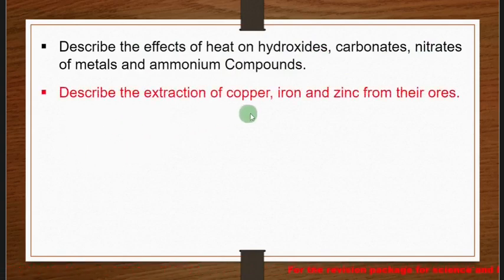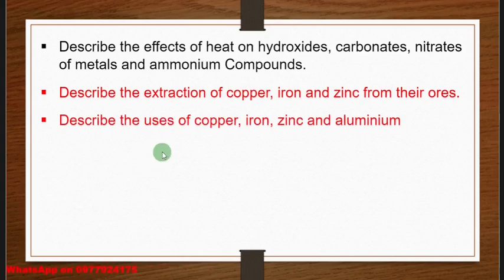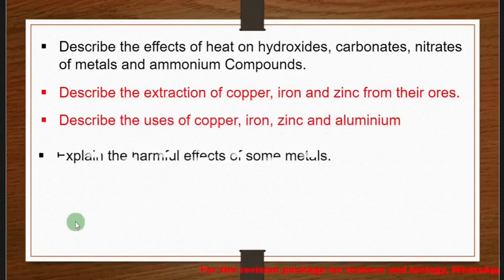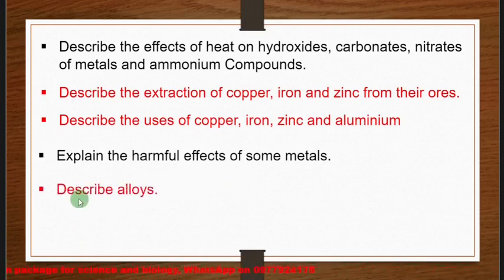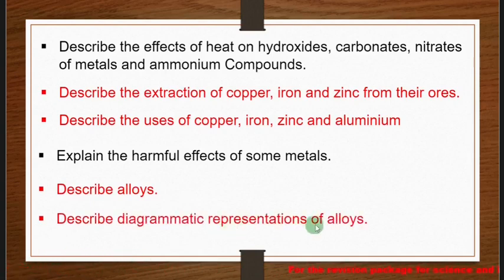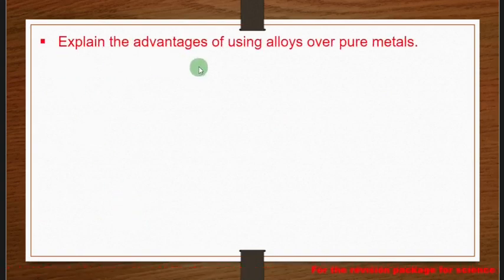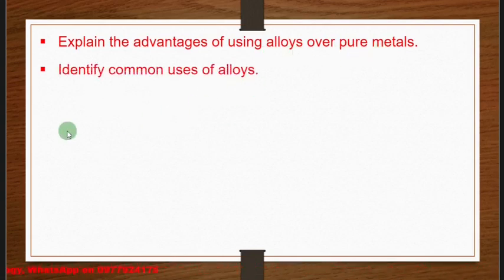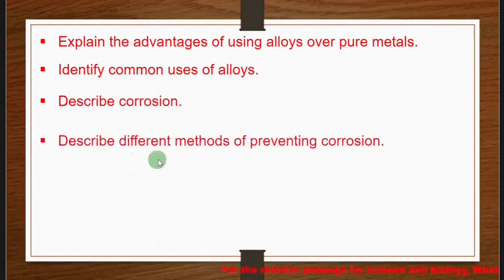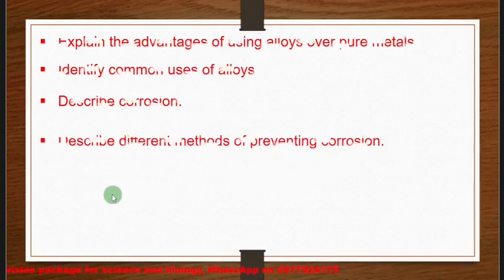Also under metals, you need to describe the extraction of copper, iron, and zinc from their ores, describe the uses of copper, iron, zinc, and aluminium, explain the harmful effects of some metals, and describe alloys including their diagrammatic representations. You also need to explain the advantages of using alloys over pure metals, identify common uses of alloys, describe corrosion, and describe different methods of preventing corrosion.